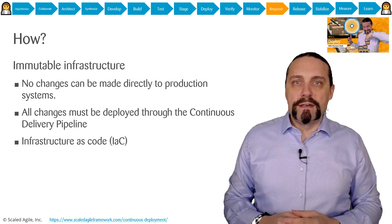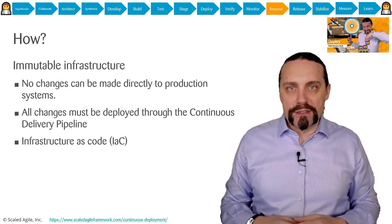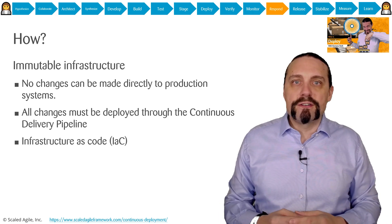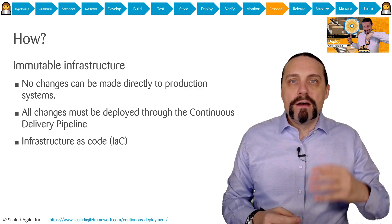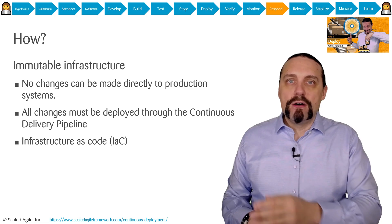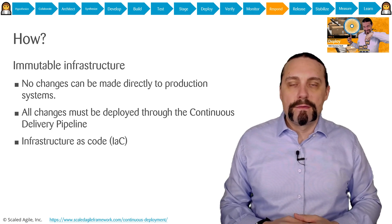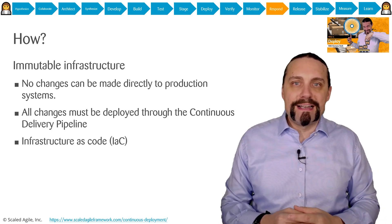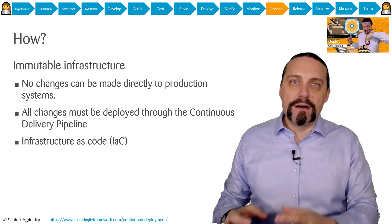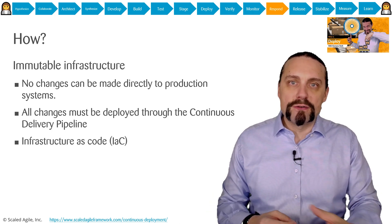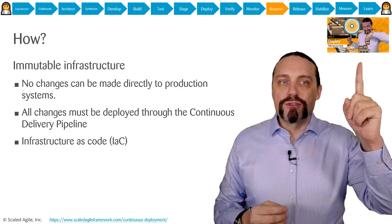It is also helpful to have a so-called immutable infrastructure in production. Immutable infrastructures are infrastructures where we cannot make direct changes to production — all changes always need to go through the continuous delivery pipeline. Infrastructure as code helps a lot here, because all of the configuration of the environments is within configuration files stored in version control. If you want to know more about infrastructure as code, watch my video.